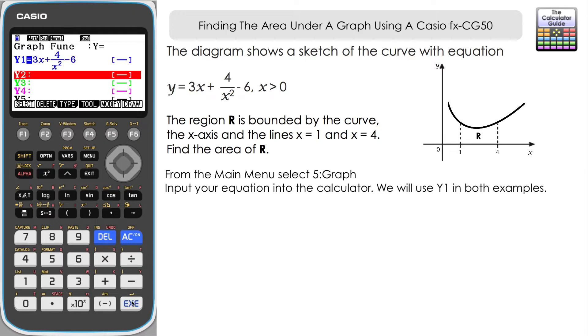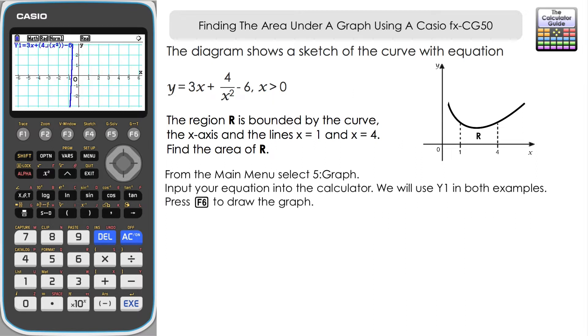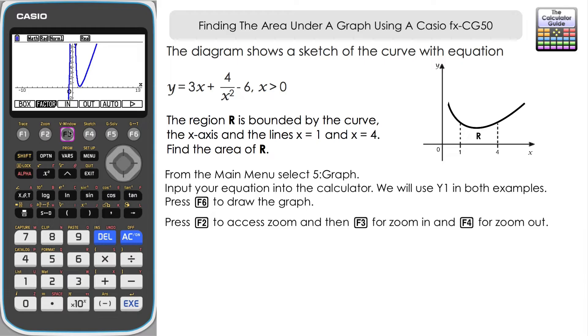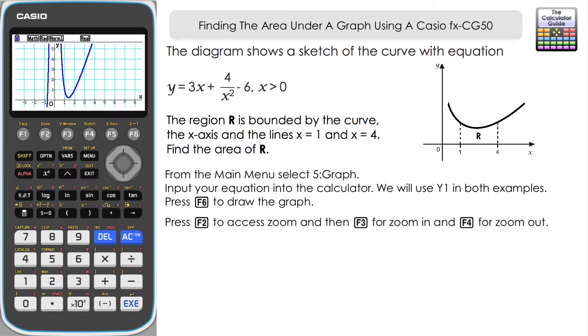Once we have inputted it there, let's press F6 to draw the graph. You can see we've got a certain degree of it displayed here. You can scroll up or scroll right to view a little bit more. And if we wanted to view even more of the graph, we can zoom out, F2 and then F4, press execute and we can zoom out to see a little bit more of the graph. Zoom back in, F2 for zoom, F3 for in and execute, and we're back to our previous view of the graph.